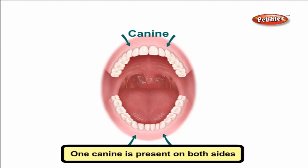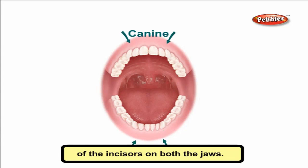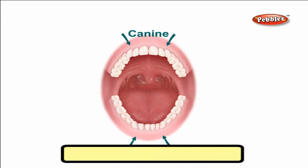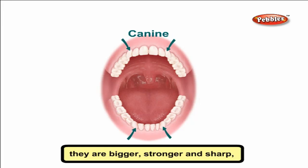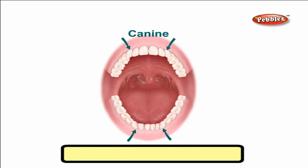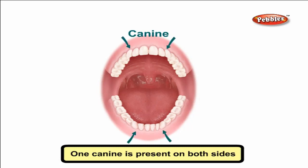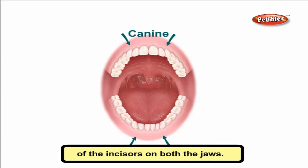Canines are the tearing teeth. One canine is present on both sides of the incisors on both the jaws. There are a total of four canines. They are sharp and pointed. In flesh-eating animals, they are bigger, stronger and sharp, which helps to tear the flesh.